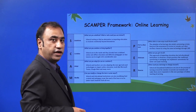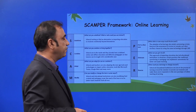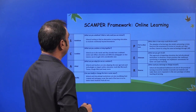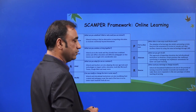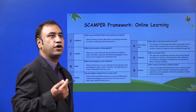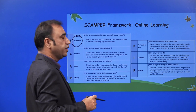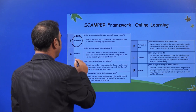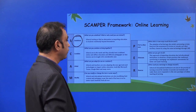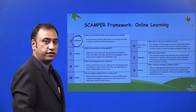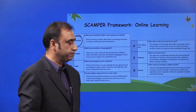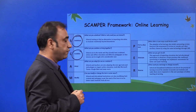We are learning the SCAMPER tool through the example of online learning. Substitute: Schools looking to find an alternative to imparting education to students seamlessly beyond boundaries — earlier it was only learning in school, now learning is beyond the school. Combined: Schools have already combined online and offline education and different pedagogies so that lessons can be taught with considerable ease — there is scope for both online and offline learning. Adapt: Schools and teachers are also adapting to new-age tools and technologies like Microsoft Teams, Google Meet, Zoom and many more.